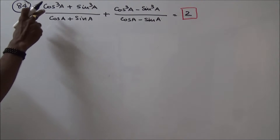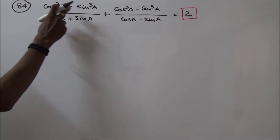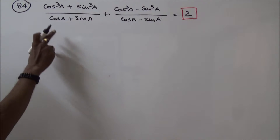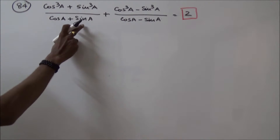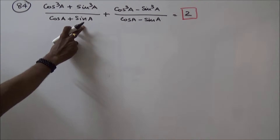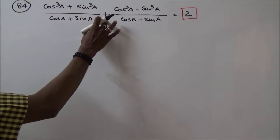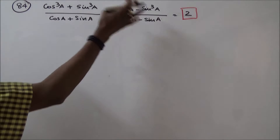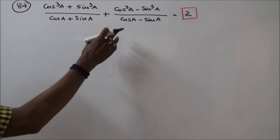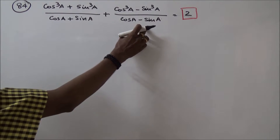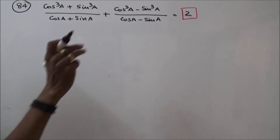Prove the identity: cos³A plus sin³A divided by cosA plus sinA, plus cos³A minus sin³A divided by cosA minus sinA, is equal to 2.